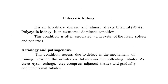Polycystic kidney is a hereditary disease, almost always bilateral in 95% of cases. The disease does not manifest itself before 40 years of age. It is an autosomal dominant condition, often associated with cysts of the liver, spleen, and pancreas. Etiology: this condition occurs due to a defect in the mechanism of joining between the uriniferous tubules and the collecting tubules — this is the junction failure theory of Hitten-Brandtner. The blind secretory tubules connected to functioning glomeruli become cystic.